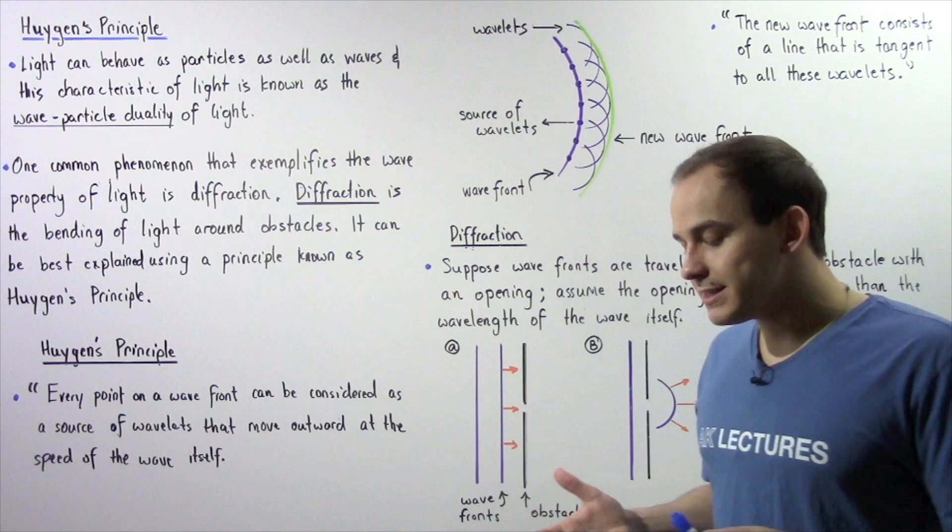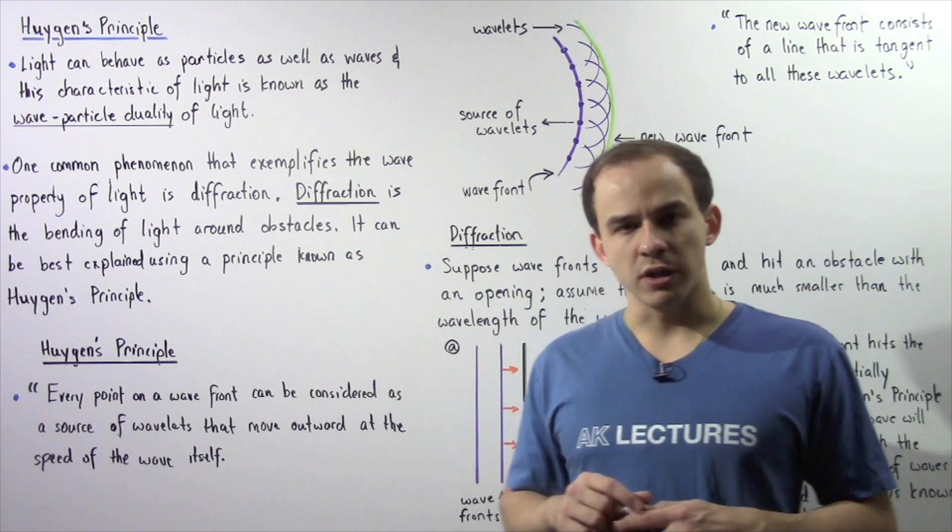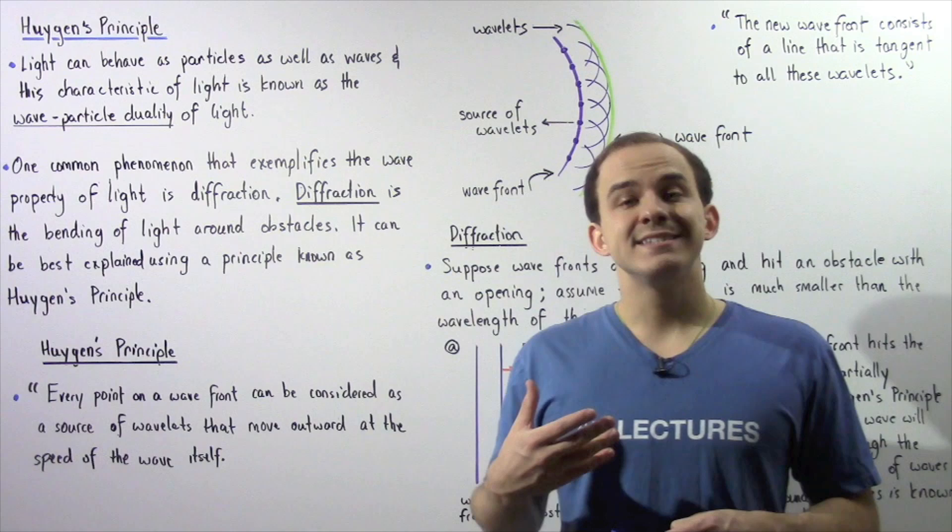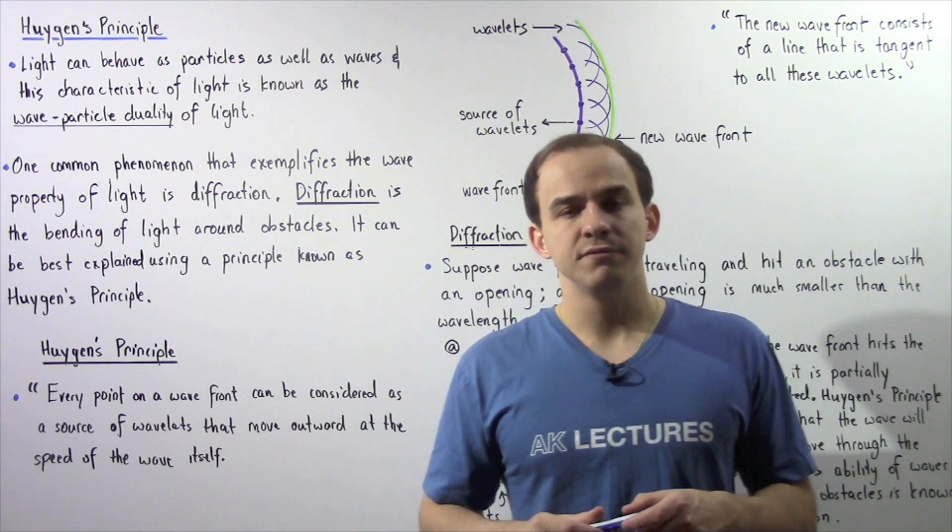This idea that light acts either as a wave or as a particle is known as the wave-particle duality of light, and we're going to discuss this idea in more detail in a future lecture. One very common phenomenon of light that exemplifies the wave property of light and not the particle property is known as diffraction.